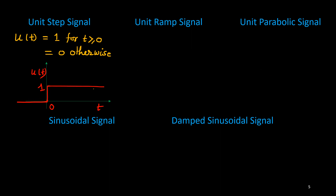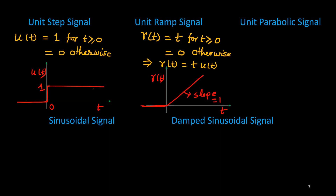For the unit ramp, r(t) is used, and it equals t for t greater than or equal to 0. This means the signal increases linearly with slope 1, and on the left-hand side it is 0. We can write r(t) as t times u(t), because u(t) equals 1 for the positive side, so it is just t, and the left side is truncated.